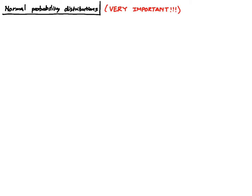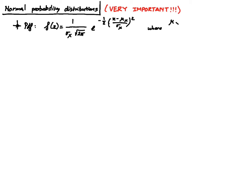The PDF f of X is equal to 1 over sigma-X times the square root of 2pi, times e to the negative one-half times (X minus mu-X divided by sigma-X) all squared. Here mu-X is the mean of the variable X, sigma-X is the standard deviation of the variable X, and X is the normally distributed variable.